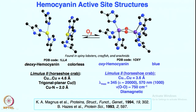Once it reacts with oxygen, the species that is formed is called oxyhemocyanin, which is blue in color. It has a very characteristic UV-visible band at 340 nanometers, which is a very strong band, and there is another characteristic peak at 570 nanometers, which is also quite strong but nothing like 340. If you look at the resonance Raman spectra, the oxygen-oxygen stretch arises at 750 wavenumbers, which is quite exciting.